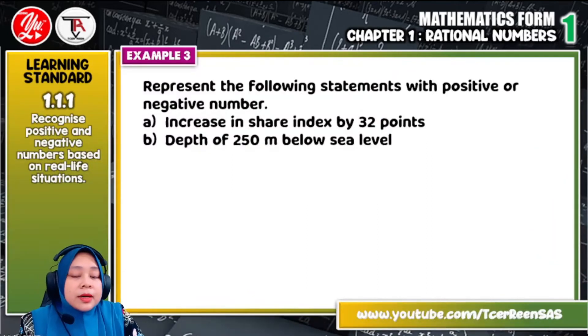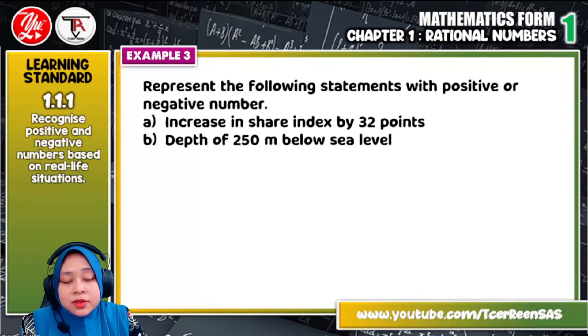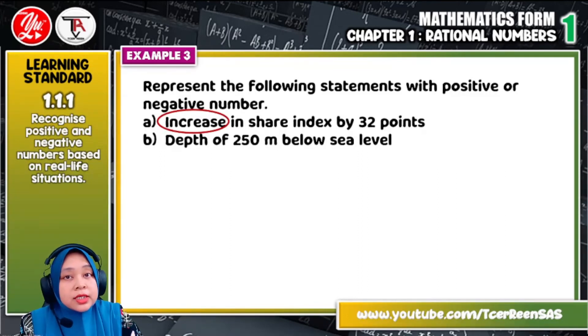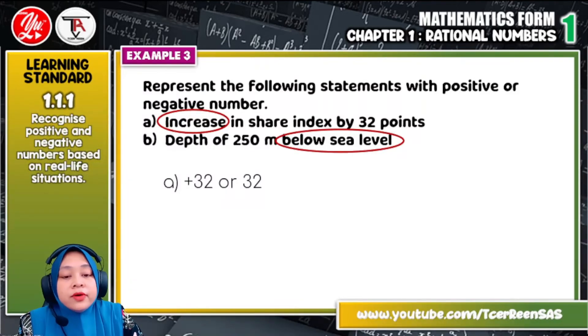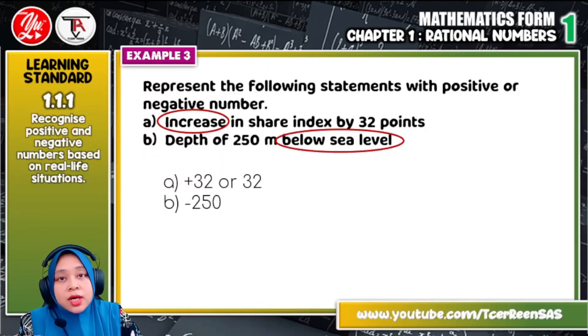Okay, the final example, represent the following statement with positive or negative number. Question A, increase in share index by 32 point. So we look at the keyword here, which is increase. So increase, we put it as plus 32 or we just write it 32. And then B, that of 250 meter below sea level. So referring to the word below sea level means that the depth is negative, right? So the answer is negative 250.